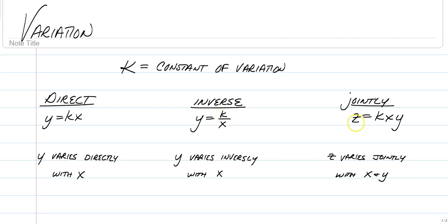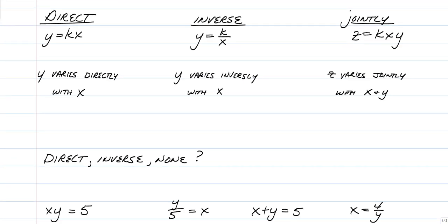Finally, jointly would be Z varies jointly with X and Y. Now, when we have more than one or a joint type of variation, it could be directly with X and inversely with Y. We can have multiple things happen with jointly, as you'll see in a little while. So those are the three different types. So now we have to practice being able to identify them.